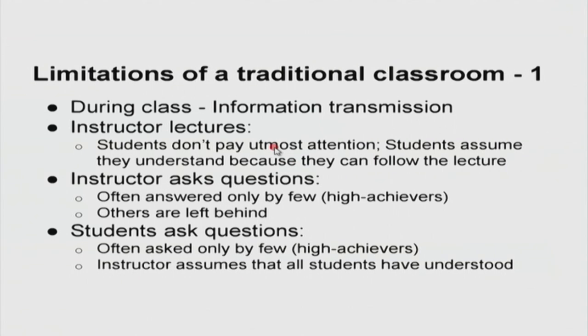Even if we improve on lecturing by having some interactivity, such as the instructor asking questions, often what happens is that these questions are answered only by a few students — typically the high achievers or the toppers of the class — and others are left behind. On the other hand, when students ask questions, these are also asked only by a few students. Sometimes the instructor makes the assumption that because a few students have understood and asked some advanced questions, the entire class is able to follow at that level. So the instructor sometimes unknowingly goes ahead with the material when a large part of the class has not been able to keep up or apply the learning transmitted in that session.